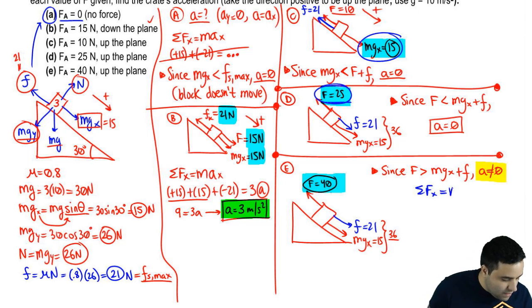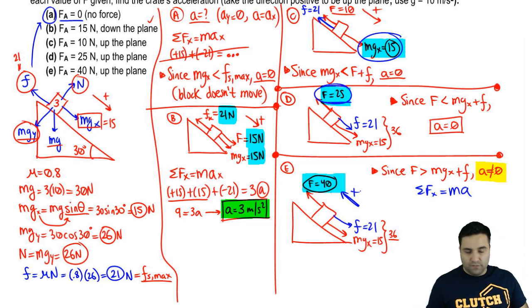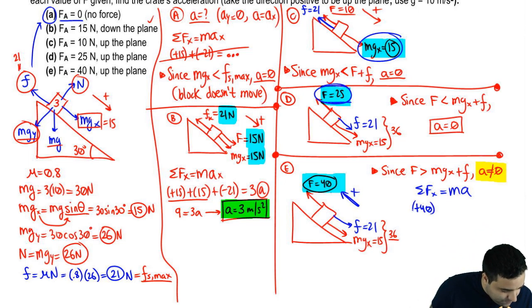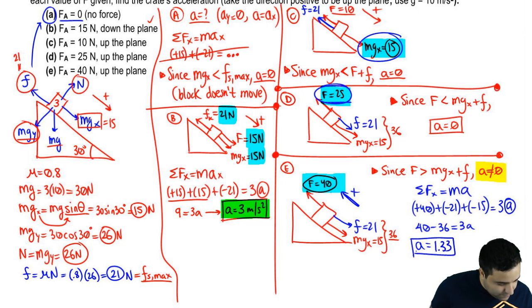Sum of all forces in the x-axis equals ma. We're almost done. Just for this one, since we're going to be going up the plane, I'm going to call that the direction of positive, since that's the direction of the winning force. So I'm going to say I have plus 40, and then opposite to it, I have negative 21, negative 15, mass is 3, and then the acceleration here. This is 40 minus 36 equals 3a, so a is 4 over 3, or 1.33 meters per second squared.